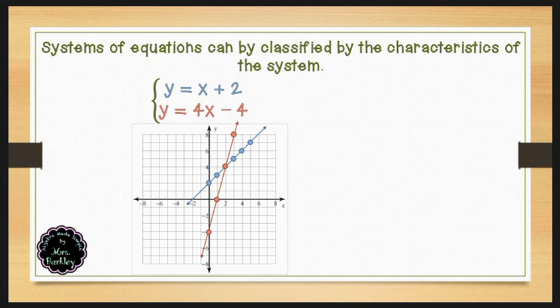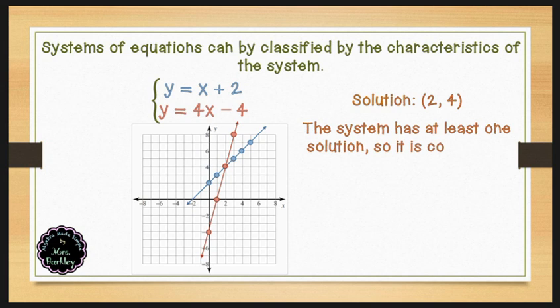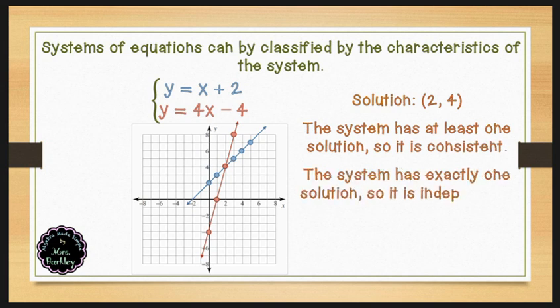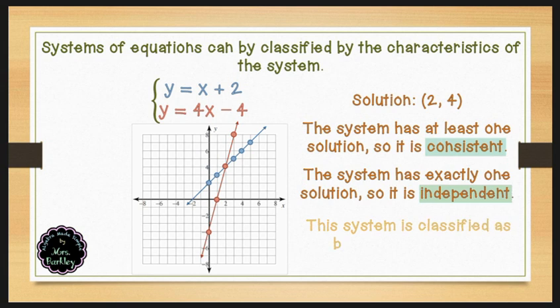We can see that our lines intersect at the point (2, 4), so our solution is (2, 4). This system has exactly one solution, so it is consistent and independent. This system is classified as being consistent and independent.